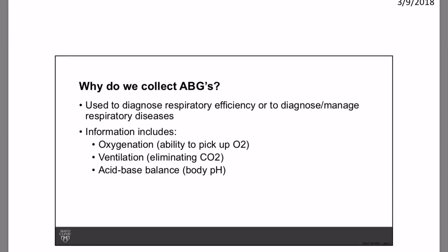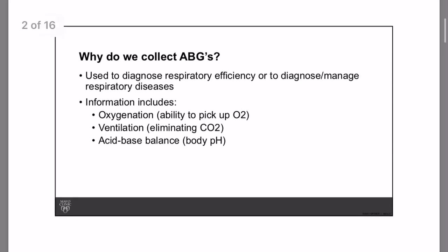Why do we collect ABGs? Simply put, we use ABGs or arterial puncture to obtain arterial blood, and the main thing we want is the measurement of gases. In another way, it is used to diagnose respiratory efficiency or to diagnose and manage respiratory diseases. The key information it provides includes oxygenation, ventilation, and acid-base balance — which is the body's pH.